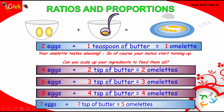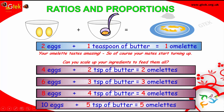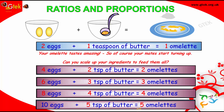For 5 omelettes, multiply by 5: 2 into 5 is 10 eggs and 5 teaspoons of butter — you will get 5 omelettes. This is how proportion works. If the result is increased by a ratio, you have to increase the ingredients based on the same ratio. That's your proportion.